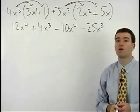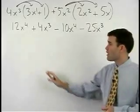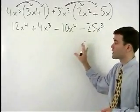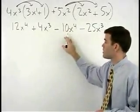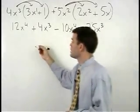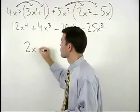The difference between this problem and the last is that we now have like terms that can be combined. 12x⁴ - 10x⁴ is 2x⁴.